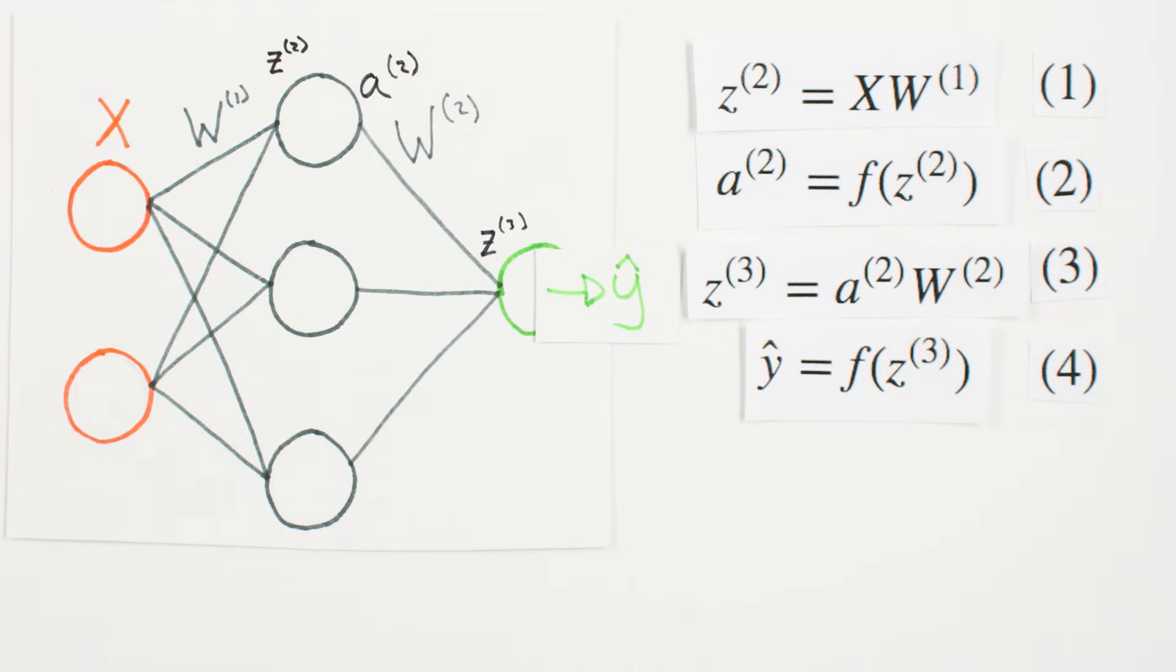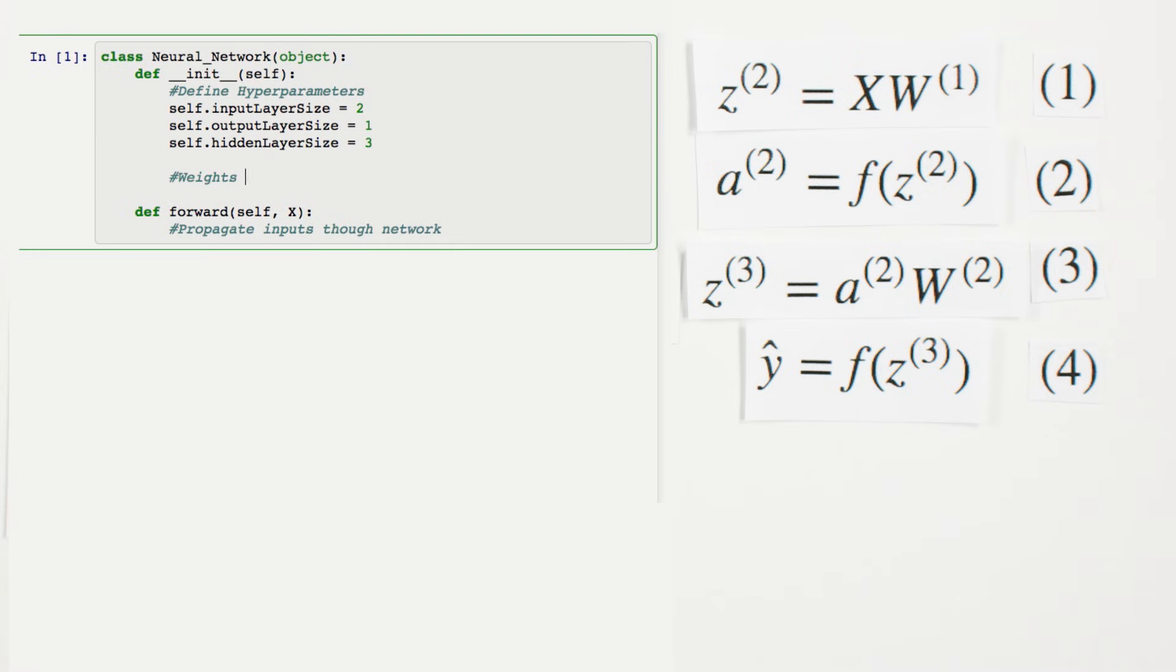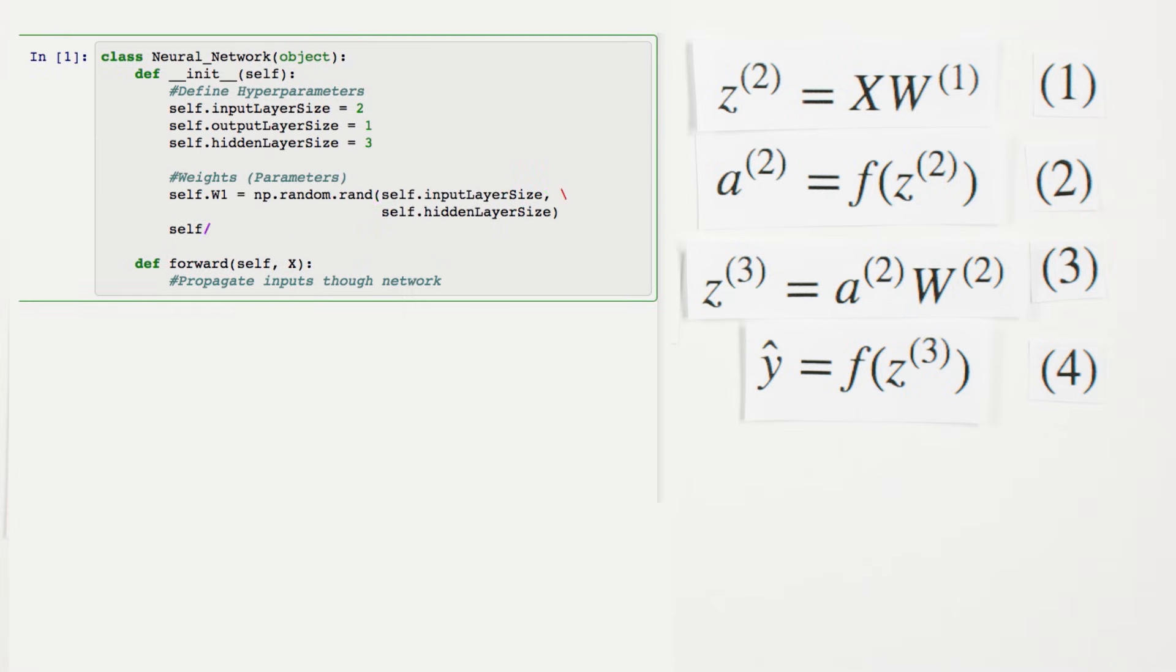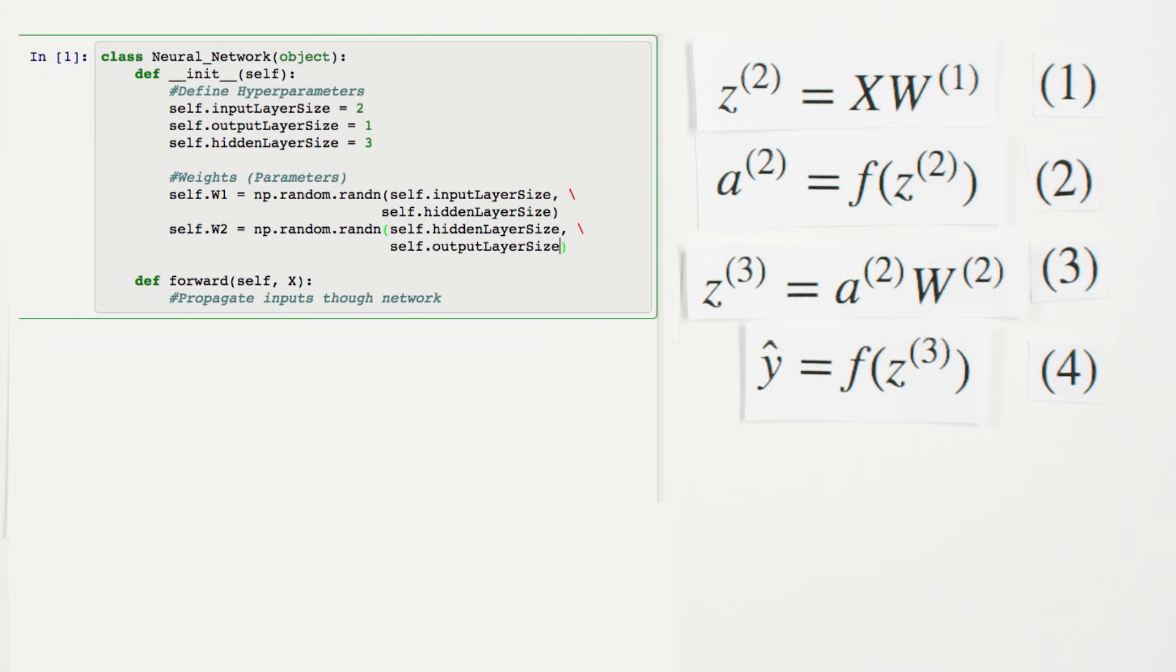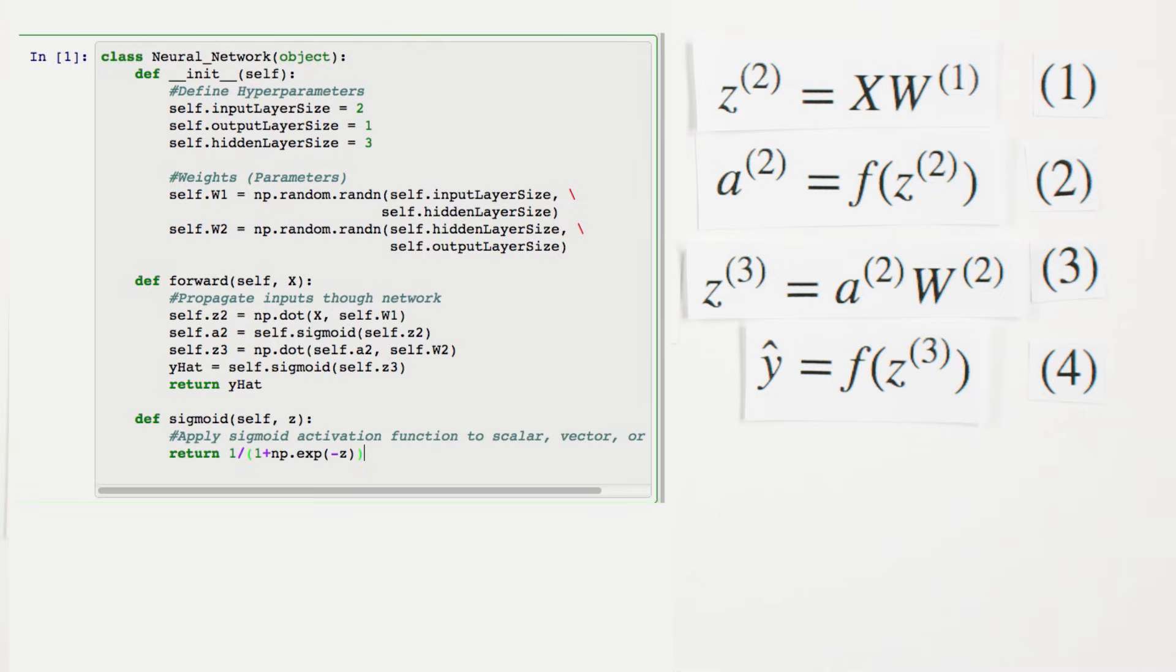We need to implement our forward propagation formulas in Python. First, we'll initialize our weight matrices within our init method. For starting values, we'll use random numbers. We'll implement forward propagation in our forward method, using NumPy's built-in dot method for matrix multiplication, and our own sigmoid method.